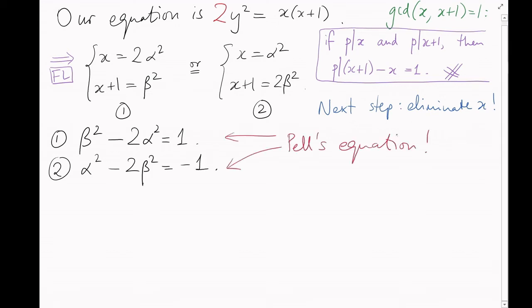But these are both forms of Pell's equation, which we've already learned how to solve. And if we find any solution to Pell's equation and substitute it back in, it'll give us values for x and y. So, we've reduced this problem to solving Pell's equation.